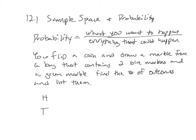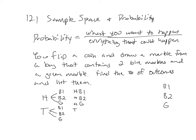So two blue ones and a green one — here's where we've got to think about it a little bit. I have blue number one, blue number two, and then a green. So when I do heads, I could flip a coin and get heads and pick the blue one marble, or heads and pick blue number two, or heads and get the green marble. So: H-blue1, H-blue2, H-green. And then essentially the same thing if I did tails first. So there are six outcomes.